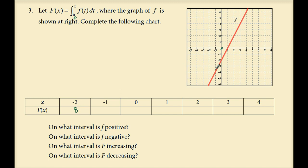From 0 to negative 1 is another trapezoid: bases 2 and 4 sum to 6, times height 1, equals 6, divided by 2 gives area negative 3. Moving backwards, the function value is positive 3. From 0 to 0, no area accumulated, so that function value is 0. From 0 to 1, area of the triangle is 1 times 2 equals 2, half of that is 1; it is negative, so F of 1 is negative 1.